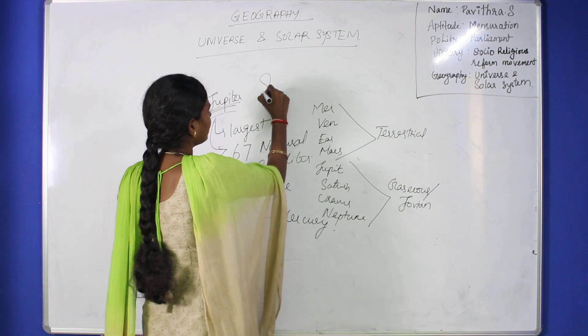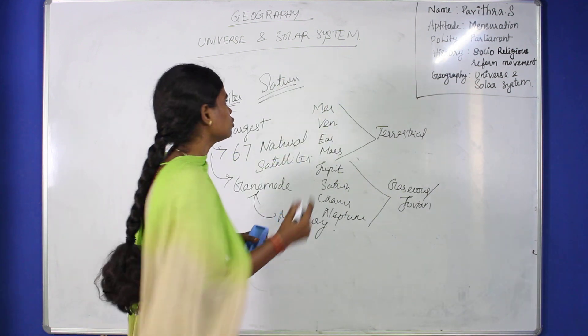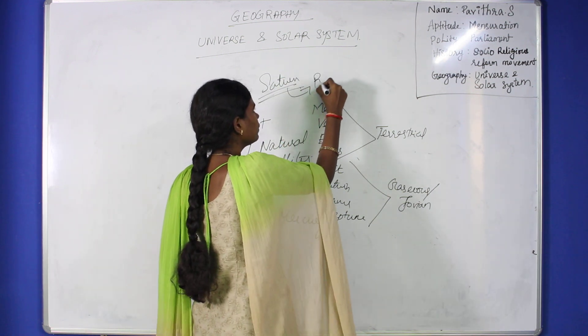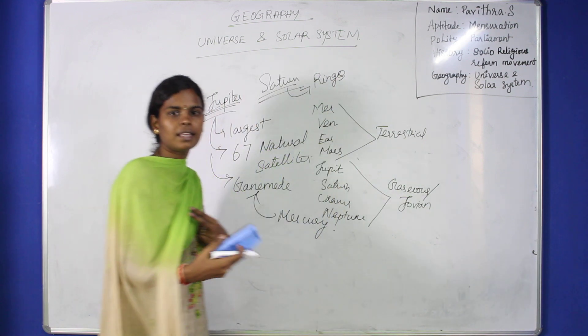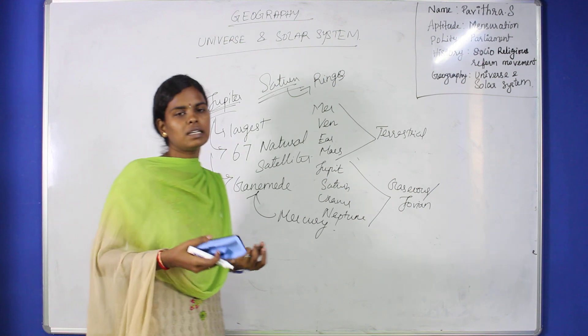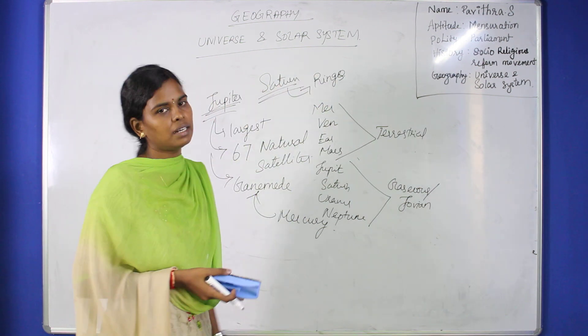Next is Saturn. You might ask, what is a ringed planet? Saturn has rings made of dust and ice particles. Saturn is known as the ringed planet.